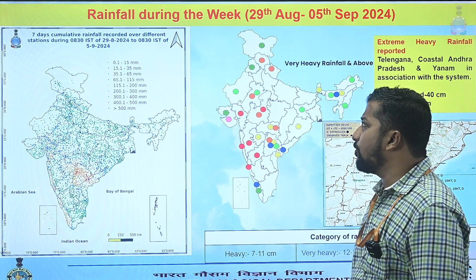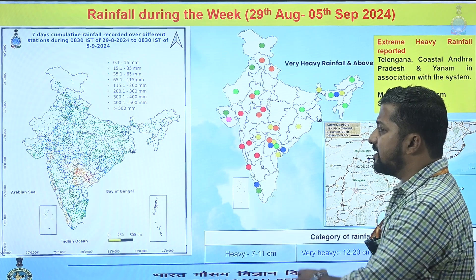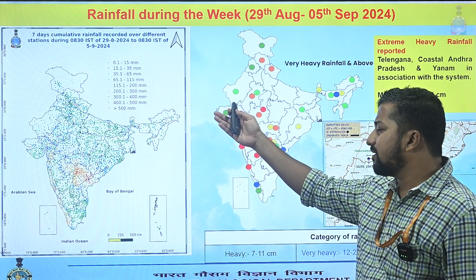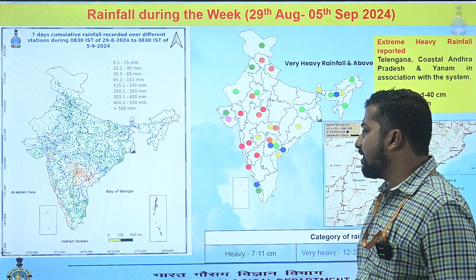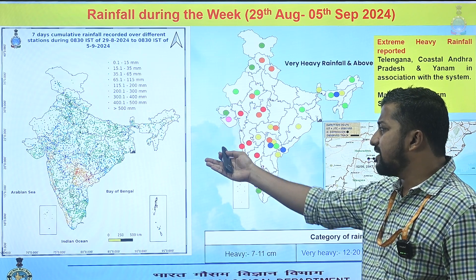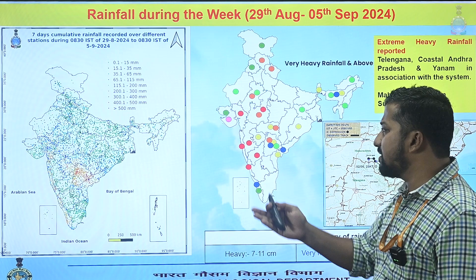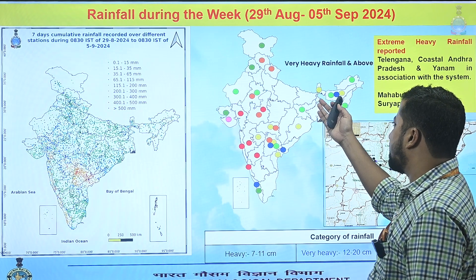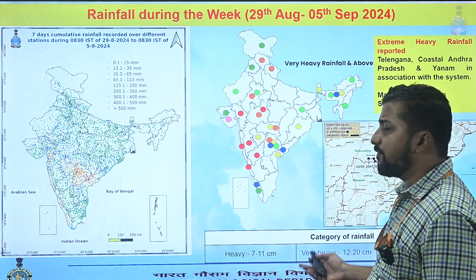This is the seven-day cumulative rainfall map for the last one week. You can see the extremely heavy rainfall mostly focused over the Gujarat and Saurashtra region in association with cyclonic storm Asana, followed by the Telangana region getting extremely heavy and very heavy rainfall with respect to the depression which made landfall inland.